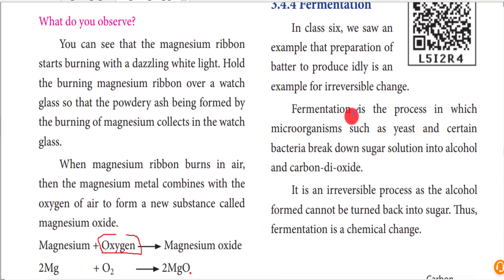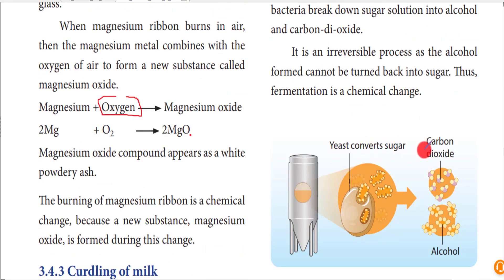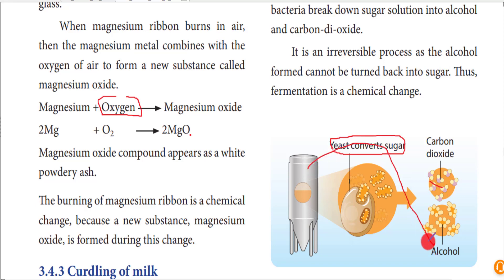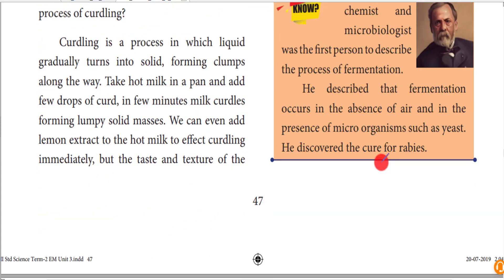Fermentation is a reaction of respiration without oxygen, so it is said to be anaerobic respiration, which is performed by bacteria and fungi like yeast. Here, sugar molecules are converted into alcohol with the help of yeast. Yeast is an organism which converts sugar into alcohol by means of anaerobic respiration, and it liberates carbon dioxide outside. You can also see this in aerated drinks.